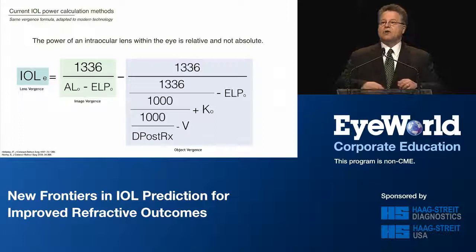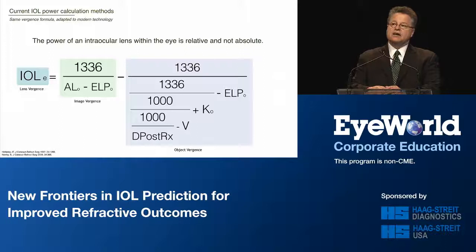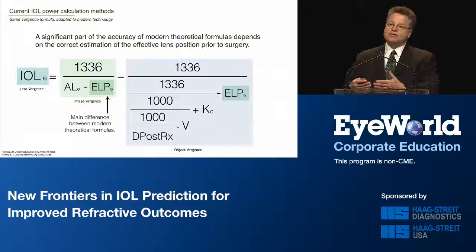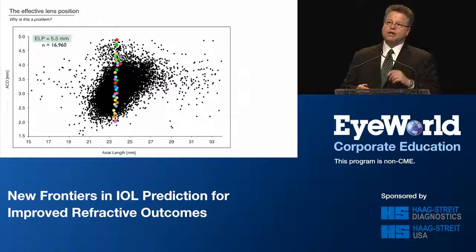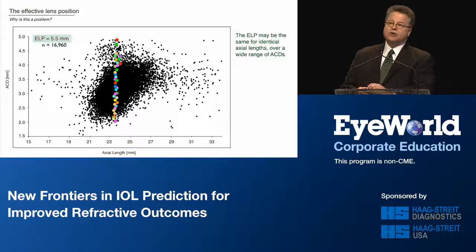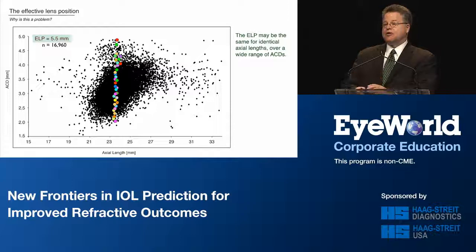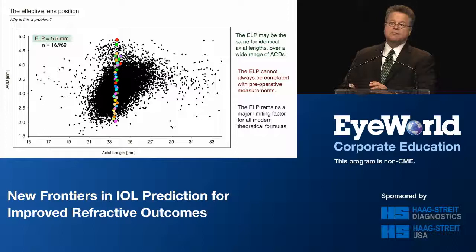The power of an intraocular lens inside the eye is relative, not absolute. A 21-diopter lens is only 21 diopters at a set distance from the cornea — the effective lens position. If that lens moves posterior or anterior, or if the anatomy of the eye and the assumptions of the formula differ, what we get is a refractive surprise. Plotting anterior chamber depth against axial length for 40 eyes at 23.5mm axial length, the effective lens position showed no correlation with preoperative anterior chamber depth whatsoever — all were 5.5mm.